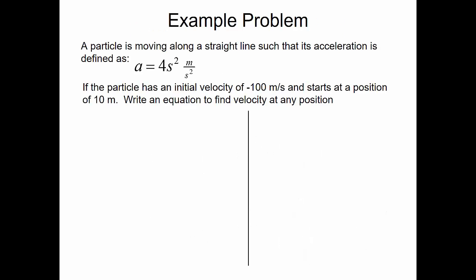Here's another example. Let's say that a particle is moving along a straight line and its acceleration is represented as a equals 4s squared meters per second squared. If the particle has an initial velocity of negative 100 meters per second and starts at a position of 10 meters, we want to write an equation to find the velocity at any position. First of all, we need to ask ourselves: is this a constant acceleration problem? Our acceleration is dependent on the position of the object. So, no, this is not a constant acceleration problem.